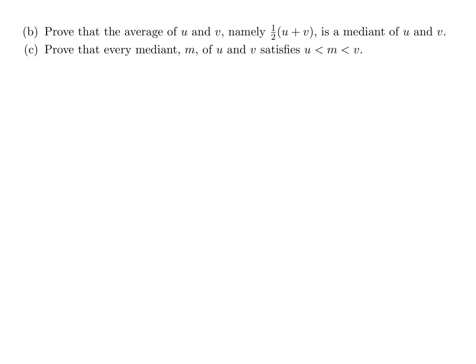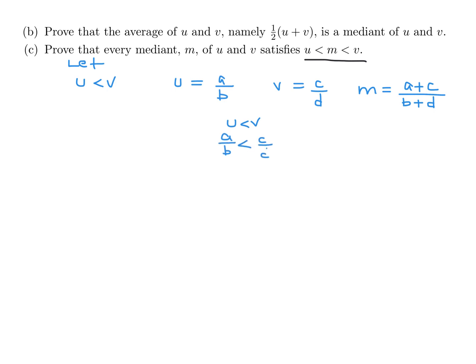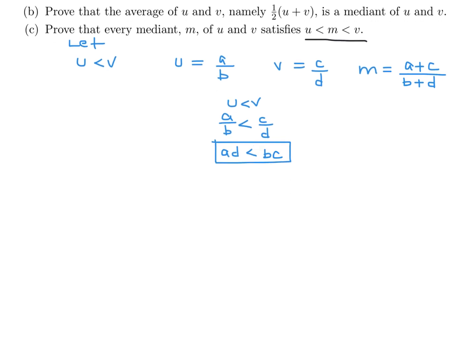Prove that every median M of U and V satisfies U < M < V. We initially know that U is less than V. U equals A over B and V equals C over D, so the median M equals (A + C) / (B + D). Since U is less than V, A/B is less than C/D. Cross-multiplying gives AD is less than BC — this is a very important point we will use later.